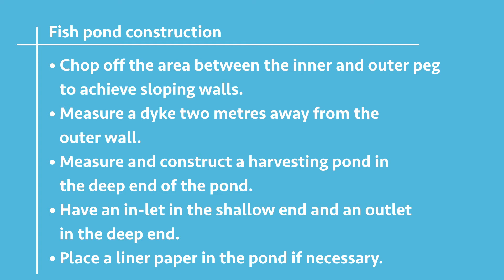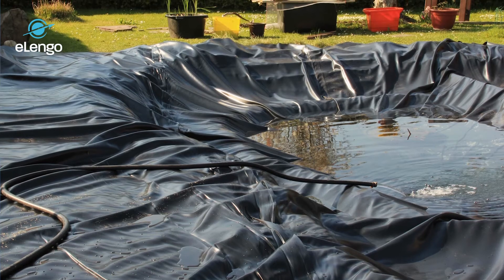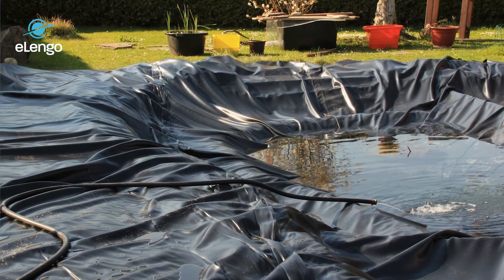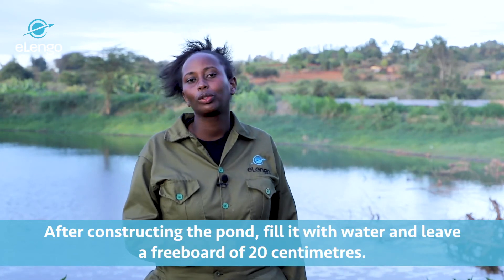We also need an inlet and an outlet. The inlet is at the shallow end, while the outlet is at the deep end. Depending on the type of soil your fish pond is constructed on, to avoid seepage, it is recommended that you use a liner. This liner covers the whole fish pond and is tucked into the dike. After construction, we fill the pond with water, leaving a freeboard of 20 centimeters.